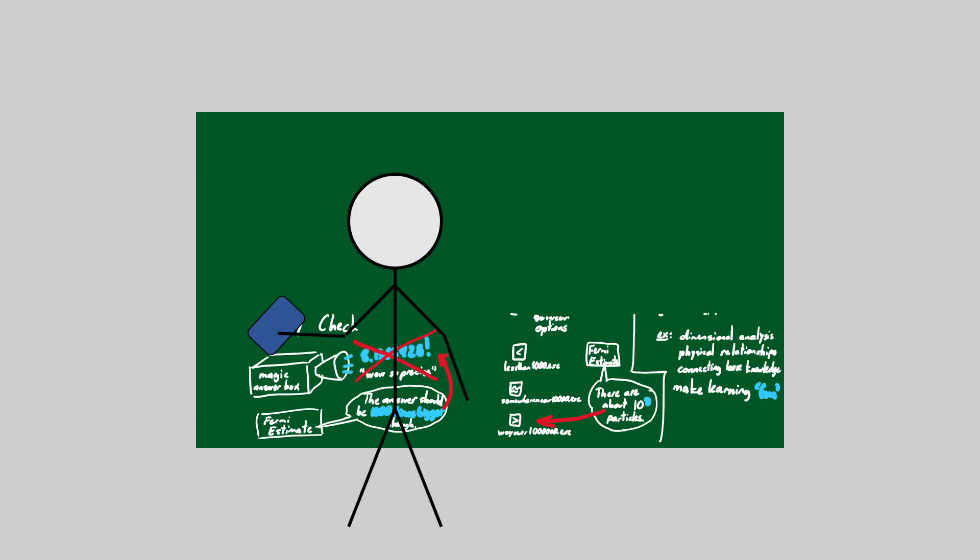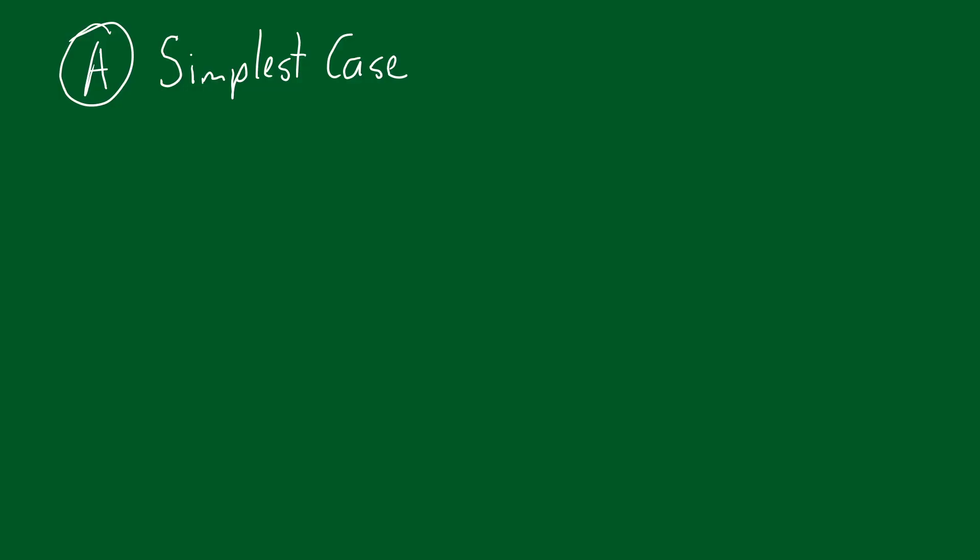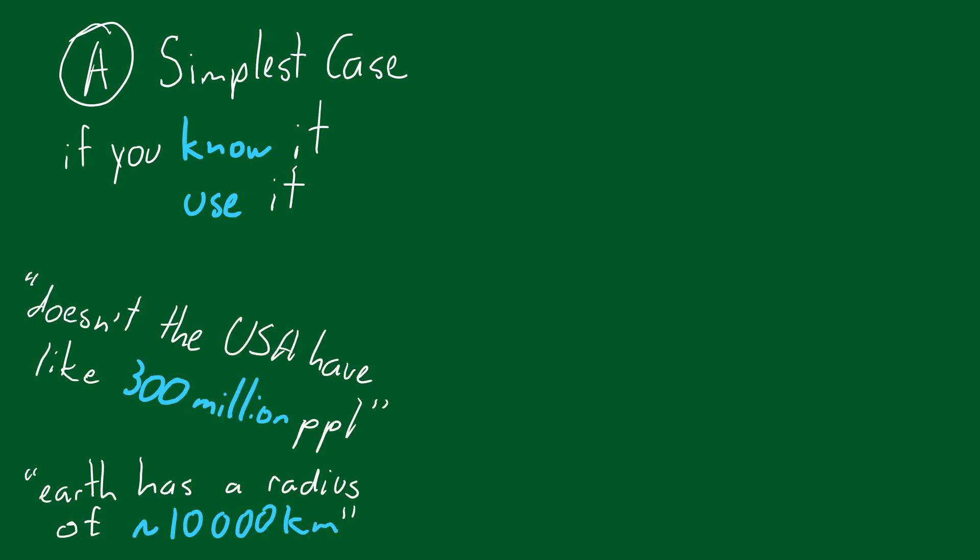Now, let's get into the strategies for finding Fermi estimates. Some estimates are easy enough to guess with no extra effort, so don't be afraid to do so if you know the answer. Often, this is where prior knowledge comes in, such as knowing the population of a particular country, or having background knowledge on the size of some objects.